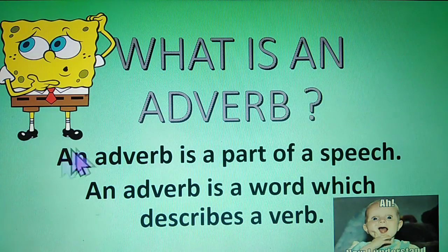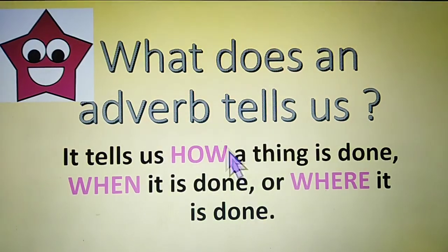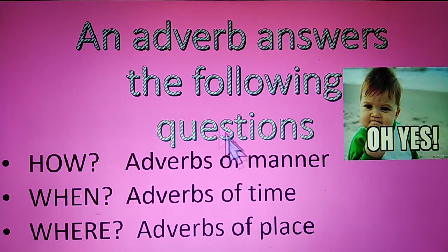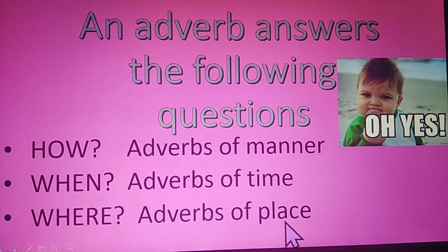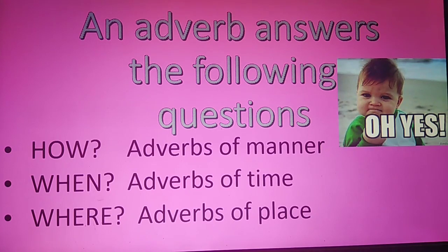Students, let's take a quick recap. Are you ready? What is an adverb? An adverb is a part of speech — an adverb is a word which describes a verb. What does an adverb tell us? It tells us how a thing is done, when it is done, or where it is done. An adverb answers the following questions: how, when and where. There are three types of adverbs: adverbs of manner, adverbs of time, adverbs of place. The how adverbs we call adverbs of manner, the when adverbs we call adverbs of time, and the where adverbs we call adverbs of place. We will learn more about these three kinds of adverbs in our next video.